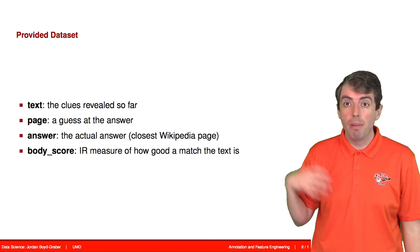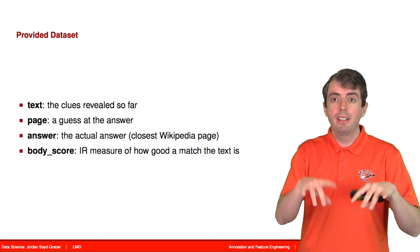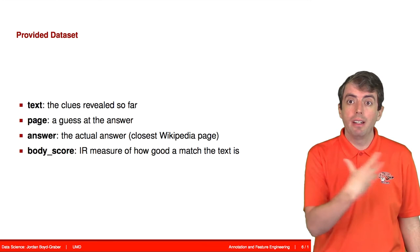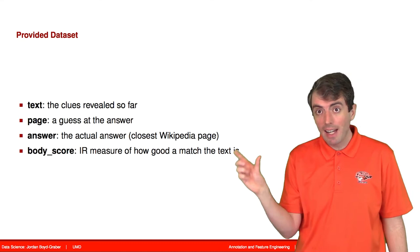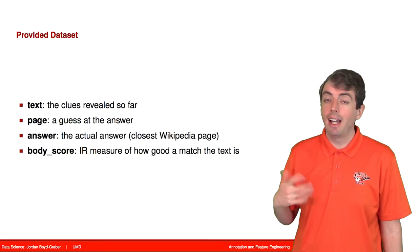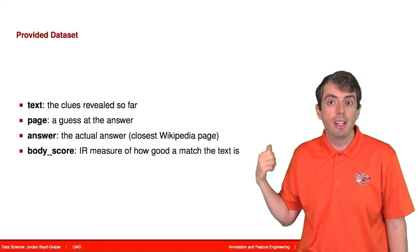You also get the body score. So the way that we're generating guesses is we're going to essentially type in the text of the question into the Wikipedia search bar. And that calls something called an information retrieval index that then returns a bunch of answers. And then that has a score associated with each of the guesses. And we're going to use that score of the guess as another feature. And it's a quite good feature. But hopefully we can do better and craft features that do better than the score.